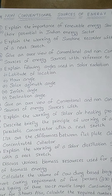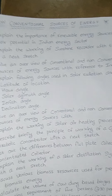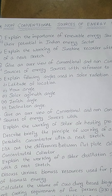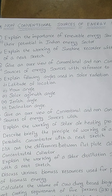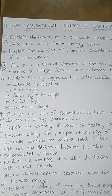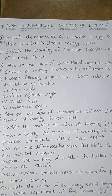The first question is: explain the importance of renewable energy sources and their potential in the Indian energy sector. Here you have to write about renewable energy sources — what is the importance, and how renewable energy sources play an important role in the Indian energy sector. For part B, explain the working of a sunshine recorder with the help of a neat sketch. You have to draw the diagram, label the parts, write the working principle, and explain the exact working of the sunshine recorder.